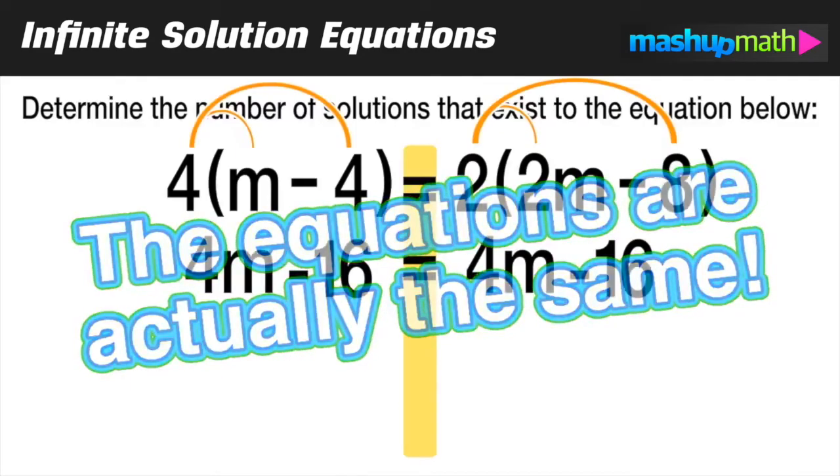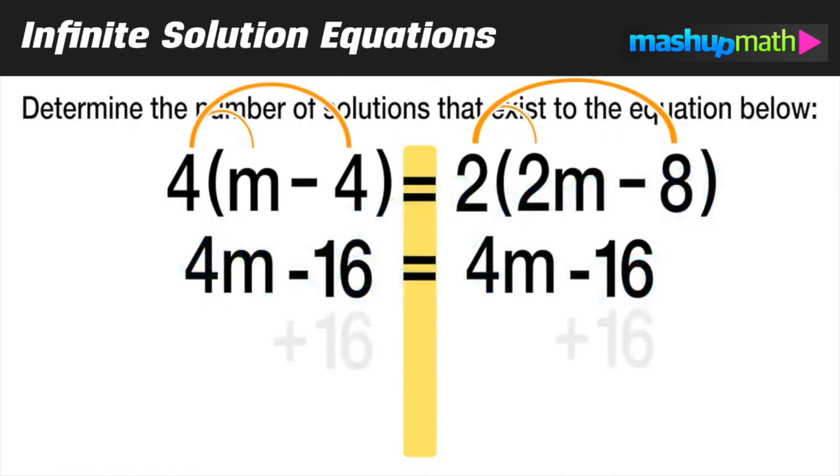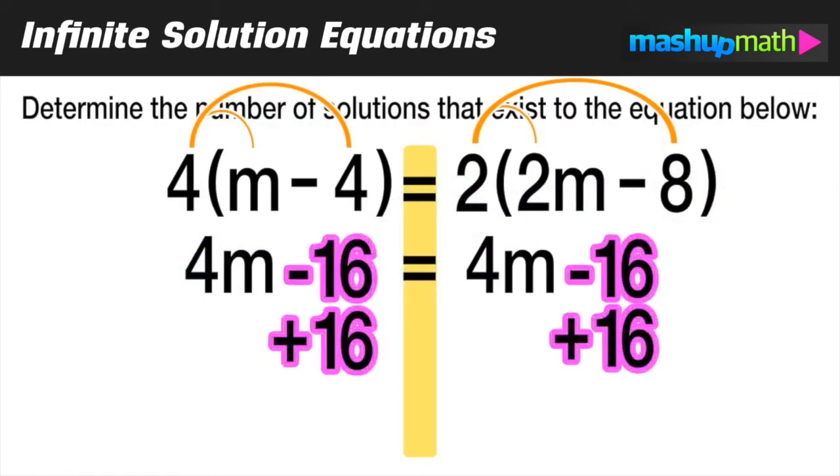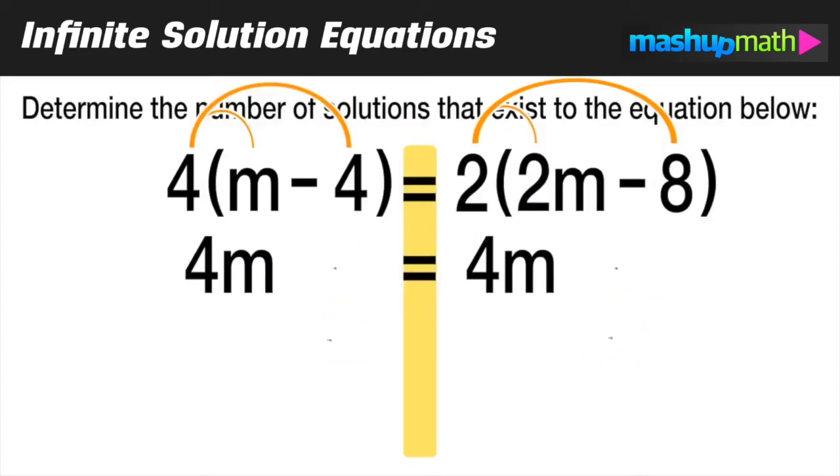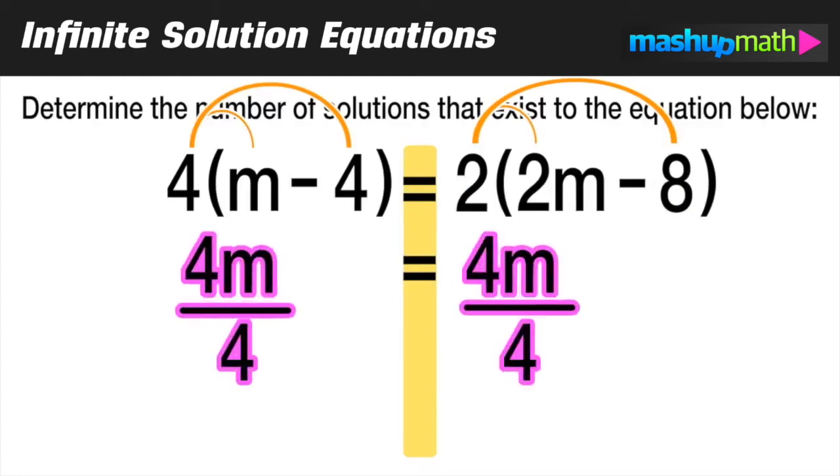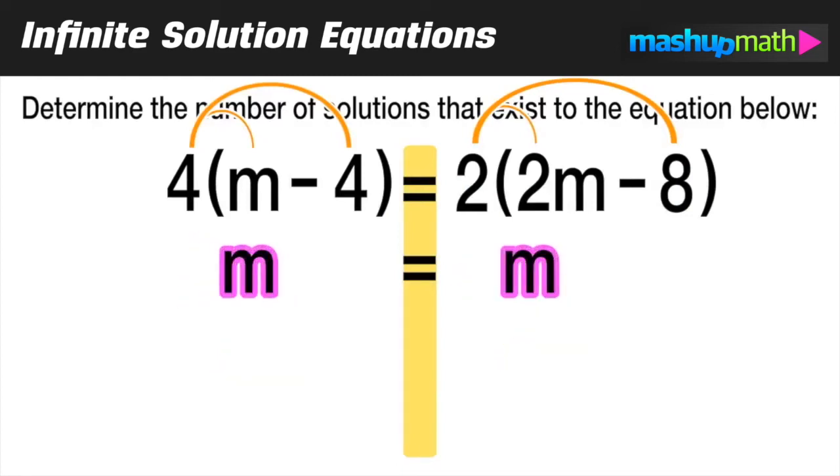Let's go back and continue to solve this equation. If we add 16 to both sides, it will cancel out the 16 on both sides. Now we're left with 4m equals 4m. We divide both sides by 4 and that will cancel out the 4s. Our result is that m is equal to m, it's equal to itself.